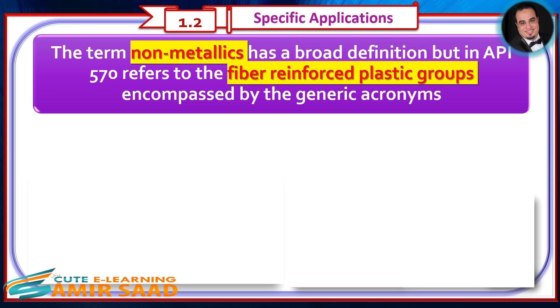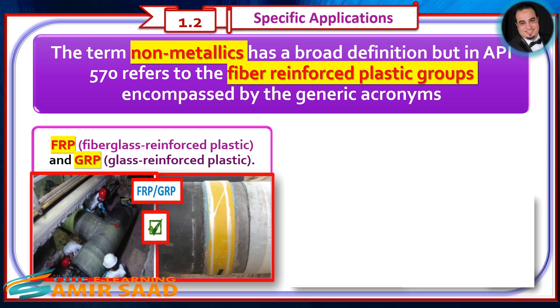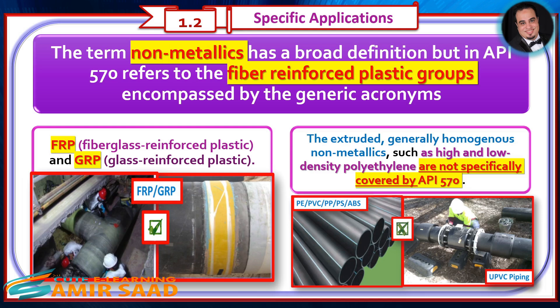Specific Applications: The term 'non-metallics' has a broad definition, but in API 570 it refers to the fiber-reinforced plastic groups encompassed by the generic acronyms FRP (fiberglass-reinforced plastic) and GRP (glass-reinforced plastic). Extruded, generally homogenous non-metallics such as high- and low-density polyethylene are not specifically covered by API 570.